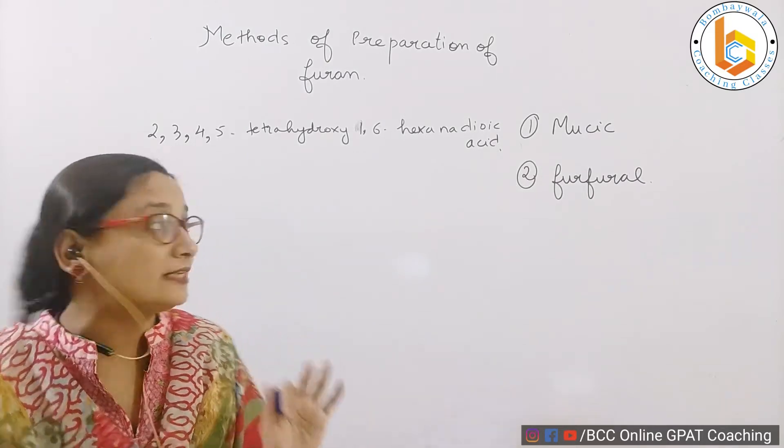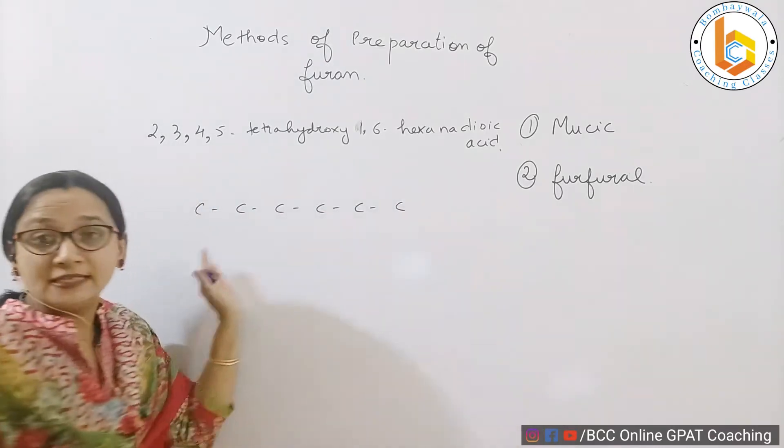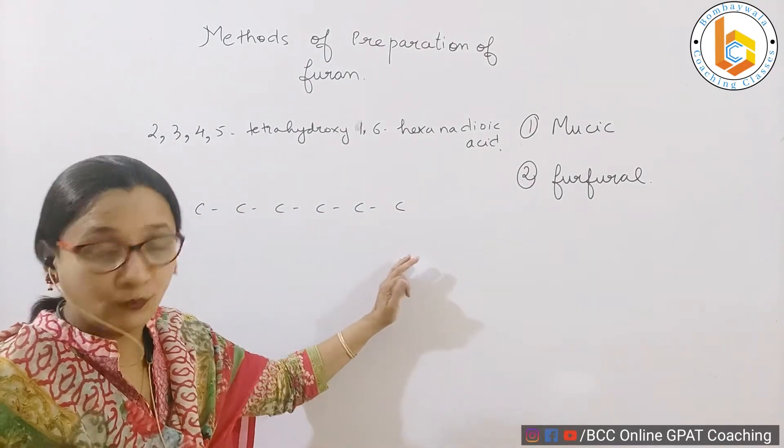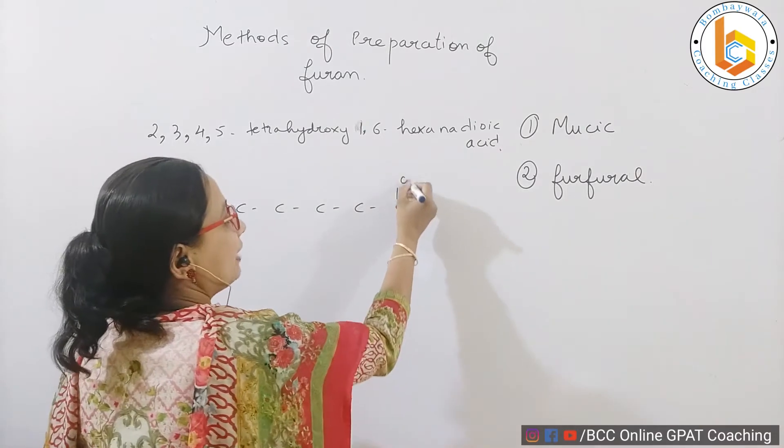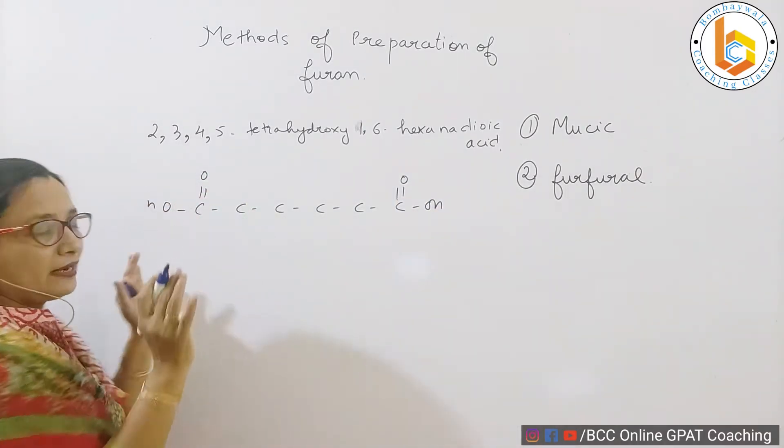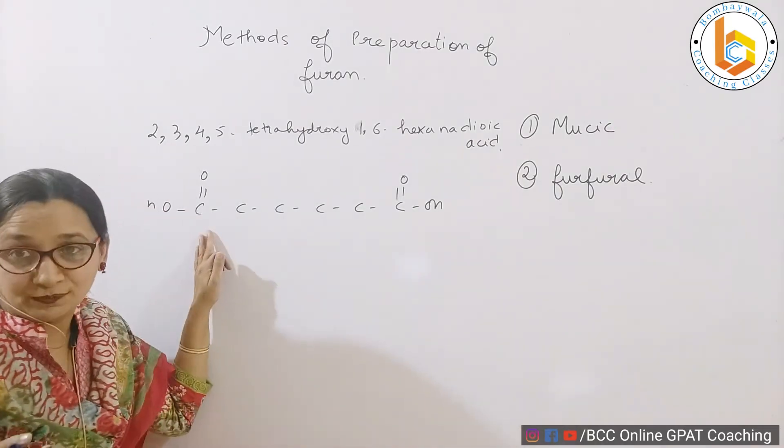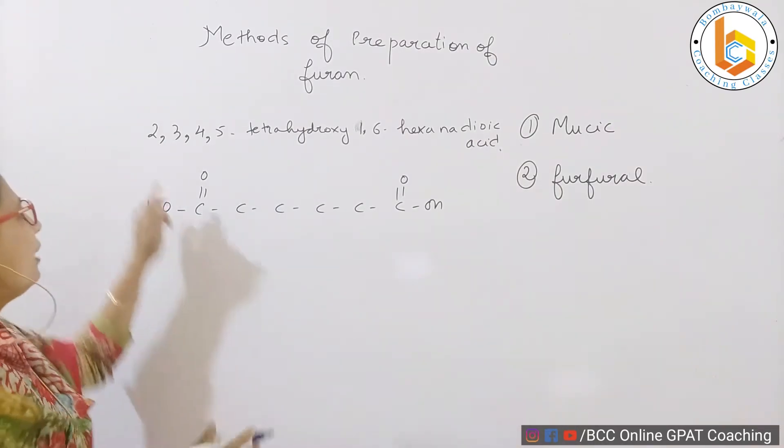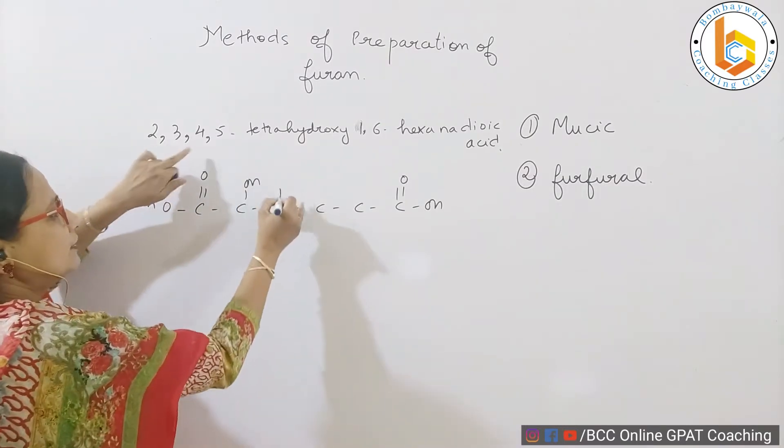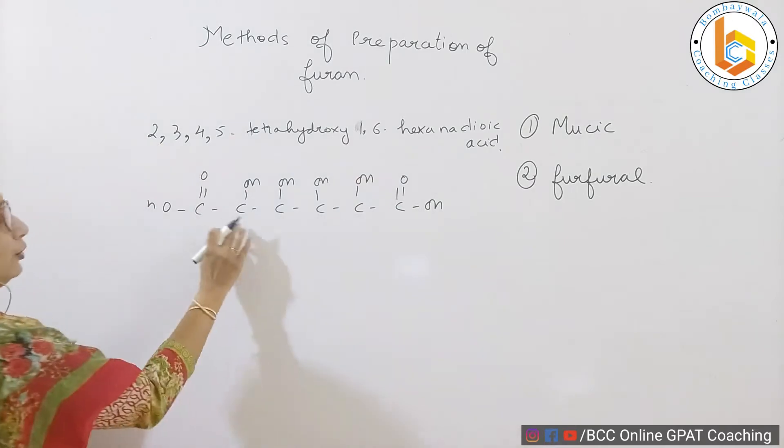It is hexane, one, two, three, four, five, six, hexane dioic acid at which position? One position and at two position, one position I'll add, six position, correct. Then you have what? Two, three, four, five tetrahydroxy.